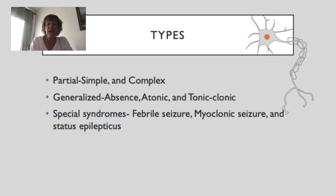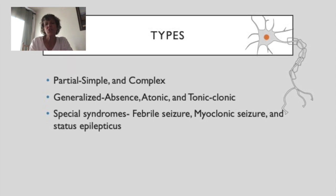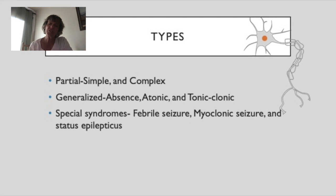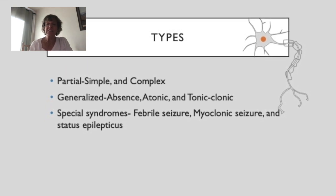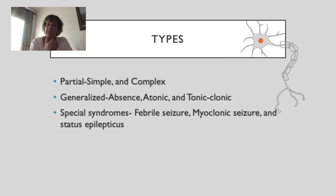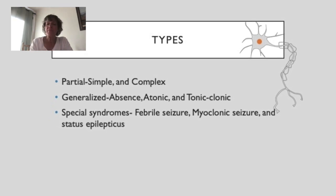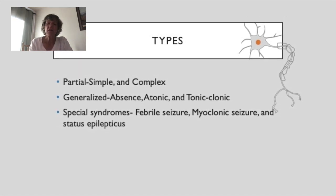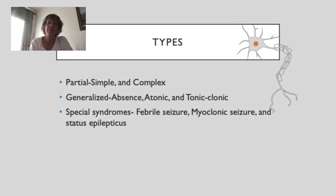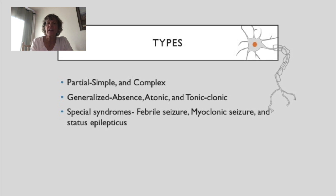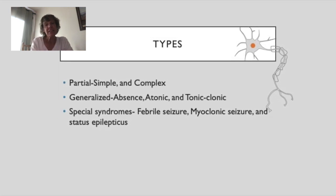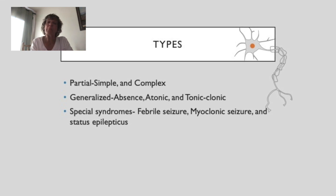There are various types of seizures. There are partial seizures, subdivided into simple and complex. There are generalized seizures — absent, atonic, and tonic-clonic. Then there are special syndromes, which can include febrile seizures, myoclonic seizures, and status epilepticus.